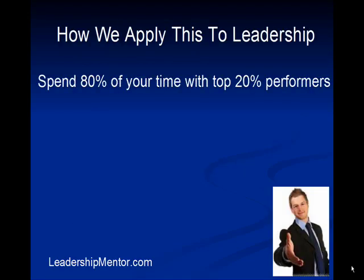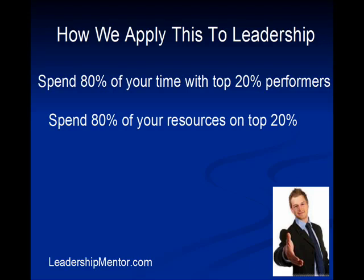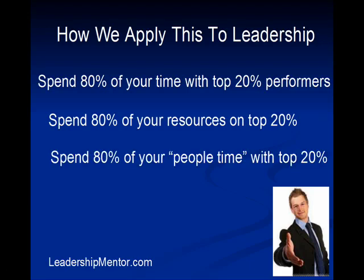So how do we apply this to leadership? One of the challenges we have as leaders is that most of you are probably spending the majority of your time with your poor performers — we feel like we need to do more training and more coaching with them, and they tend to cause more issues to deal with. If you sat down and looked at who you spend the majority of your time with today, most likely you have this upside down — spending 80% of your time with the bottom 20% of your performers. We need to flip that around: spend 80% of your time, resources, and people-time with your top 20%. That's where you're going to get the biggest impact on your team's performance.